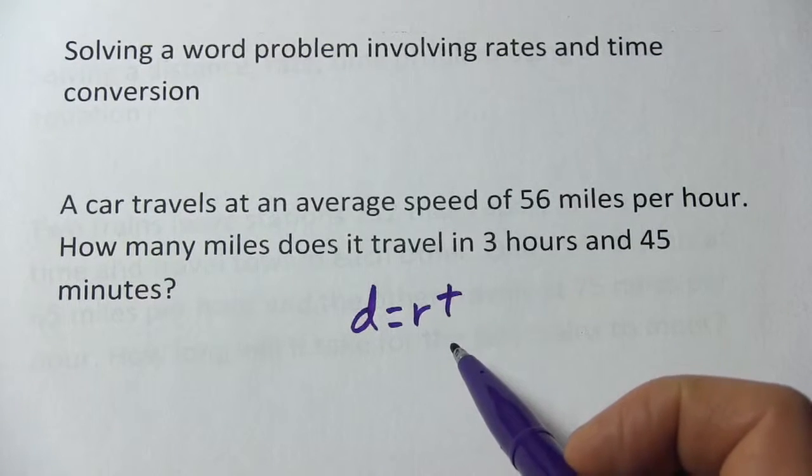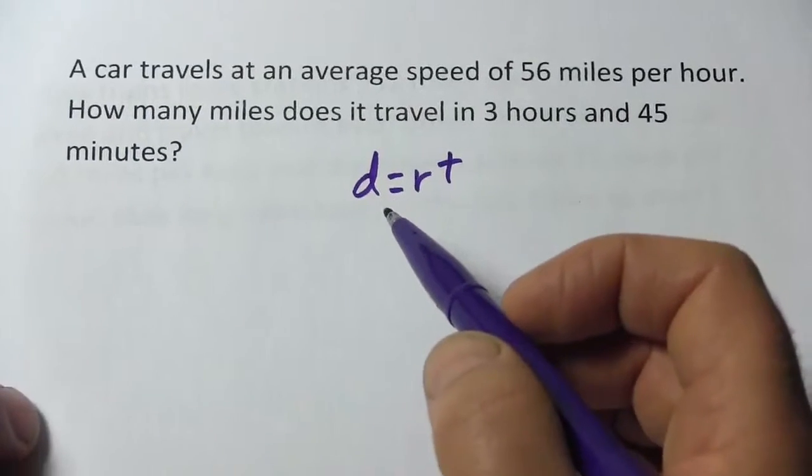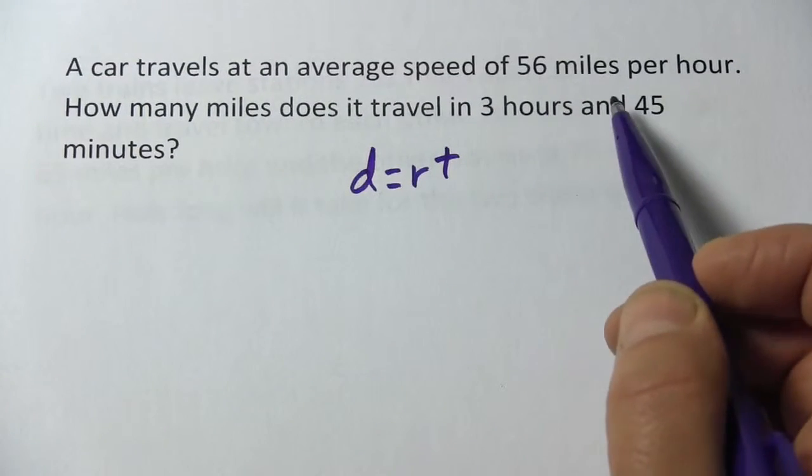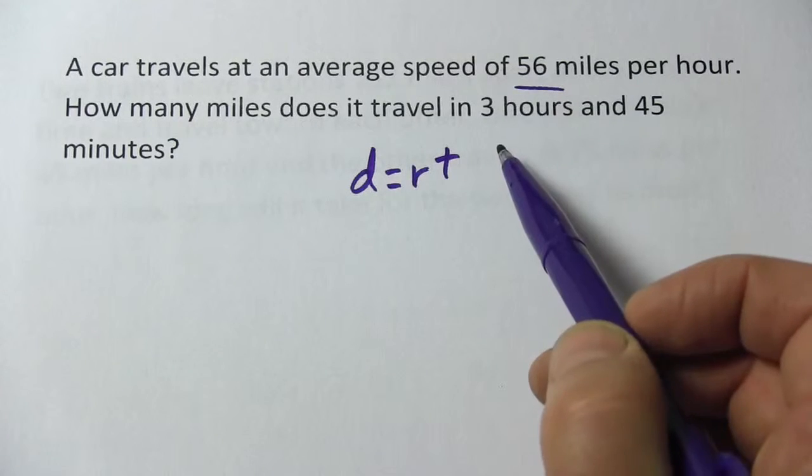And this is something you can usually apply in these situations. Let's take a look at this problem. It says a car travels at an average speed of 56 miles per hour. That's our rate. That's how fast it's going.